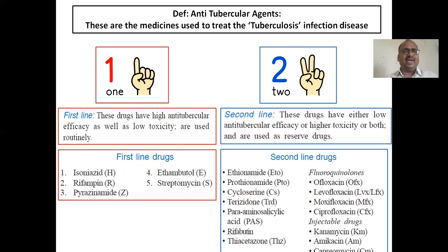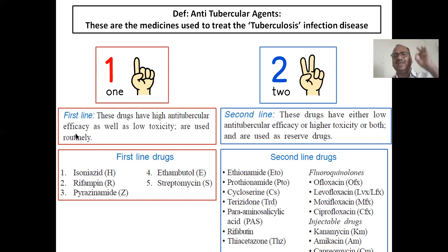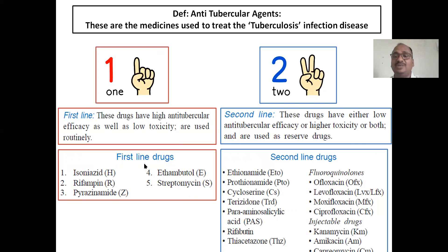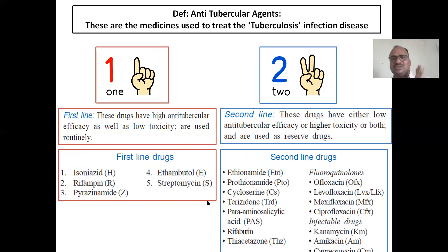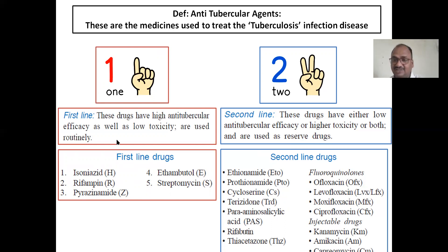Anti-tubercular agents are divided into two categories: first-line drugs and second-line drugs. First-line drugs have high anti-tubercular efficacy and low toxicity — very effective and powerful, which is why they are kept on the first line. These include isoniazid (H), rifampicin (R), pyrazinamide (Z), ethambutol (E), and streptomycin (S). Second-line drugs have low efficacy and high toxicity — almost the opposite — so you use them when organisms develop resistance to first-line drugs.